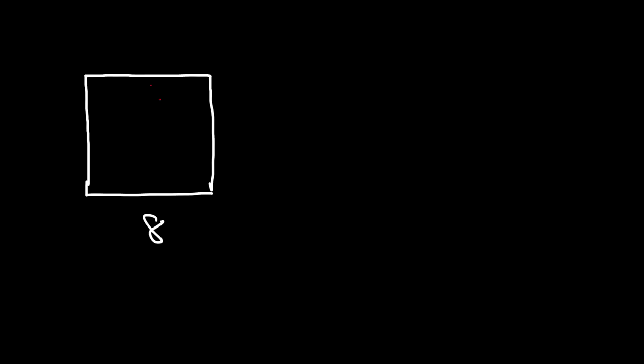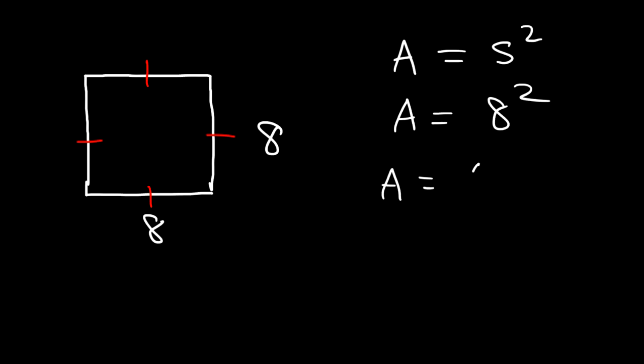In this video we're going to talk about how to calculate the area of a square. Here we have a square and the side length is 8. You need to know that all four sides of a square are the same. The area of a square, just like a rectangle, is length times width, or you could say s squared. So the area of this square is just 8 squared — 8 times 8 is 64.